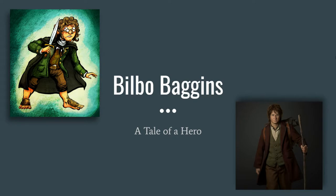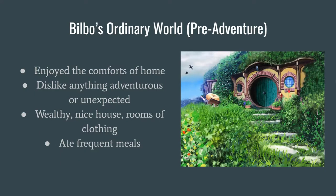Before we look at the steps of the hero's journey, we need to understand what Bilbo's ordinary world is like. In order to become a hero, he needs to leave an ordinary world behind and undergo a transformation — a metamorphosis, a change. Bilbo's pre-adventure life: he lived in a really nice hobbit hole in the Shire, a very scenic location. He enjoyed the comforts of his home, was wealthy, had rooms of clothing, and ate several meals a day — breakfast, second breakfast, lunch, second lunch, snacks. He dislikes anything adventurous or unexpected; it just wasn't respectable for a hobbit to go on an adventure.